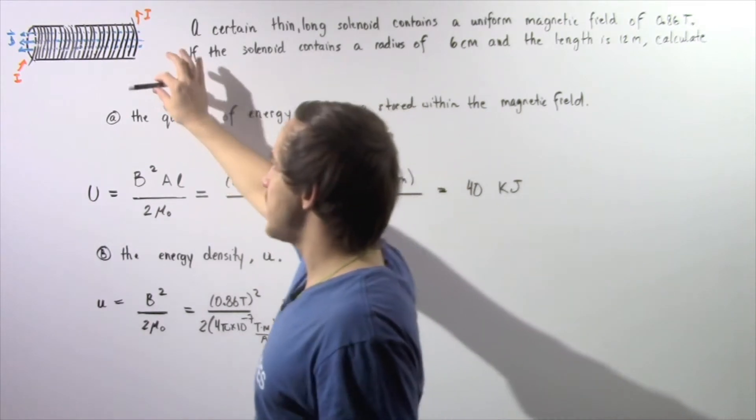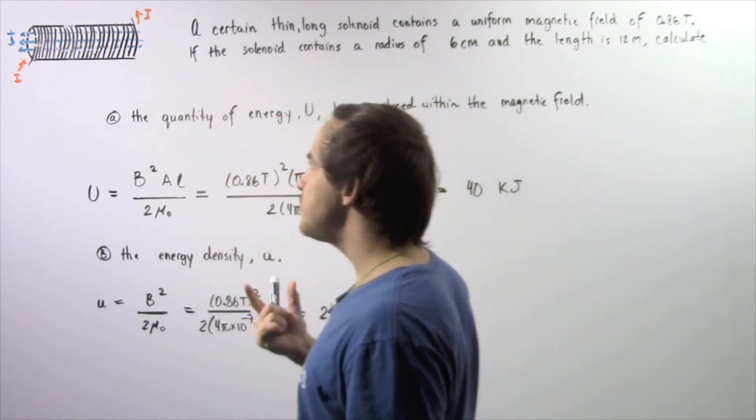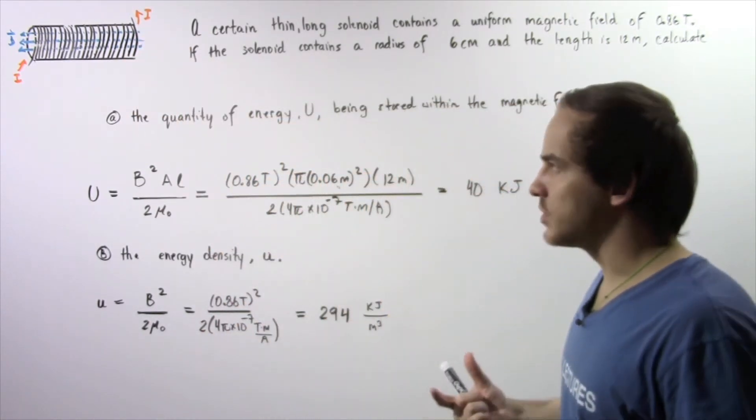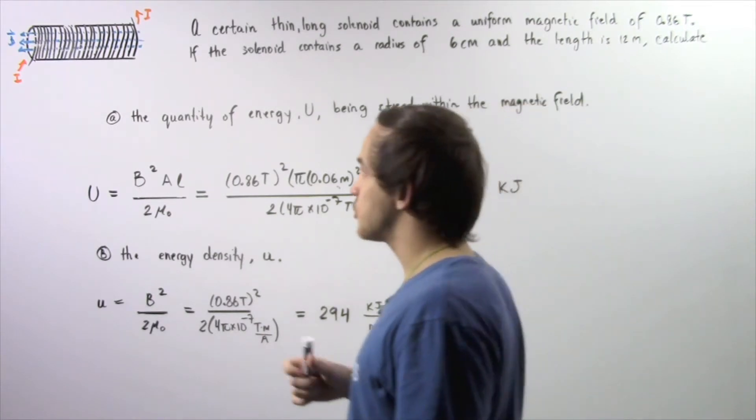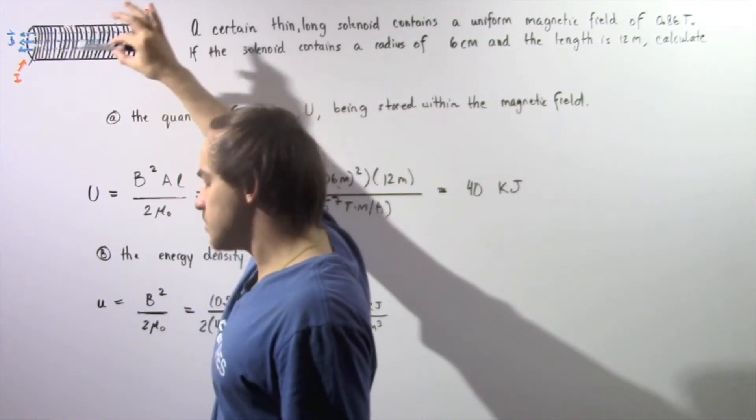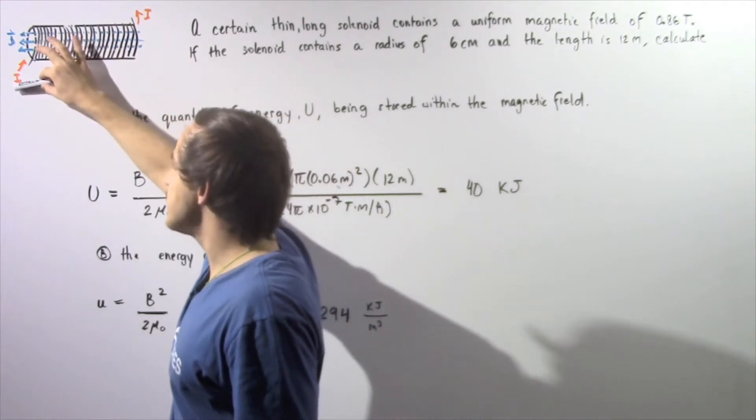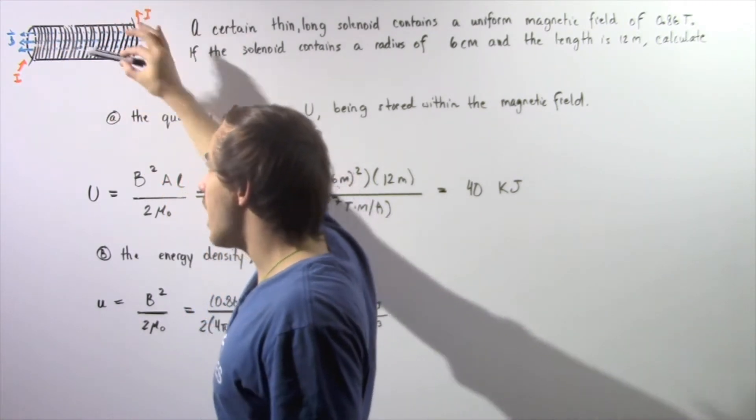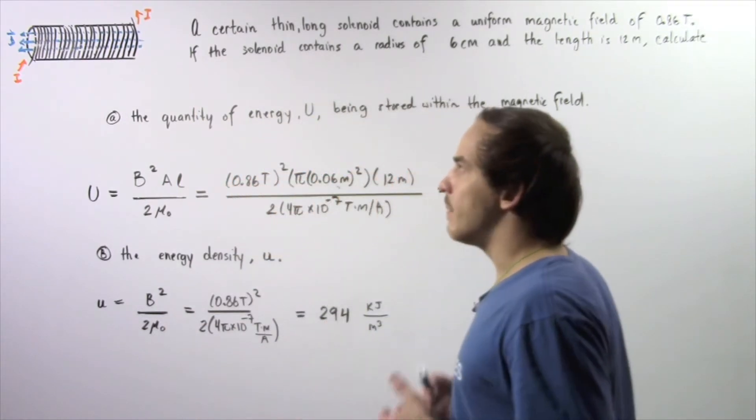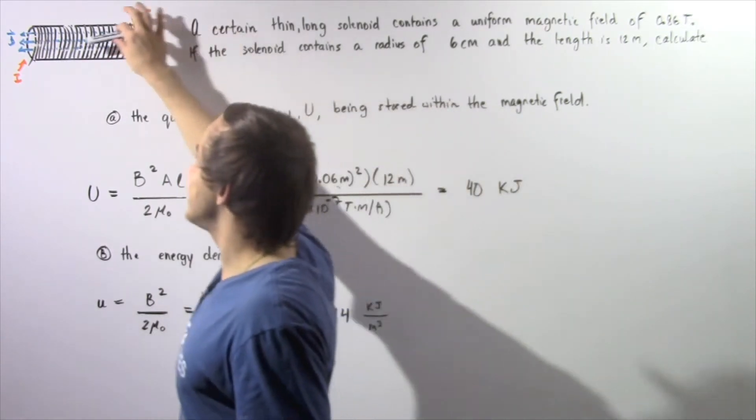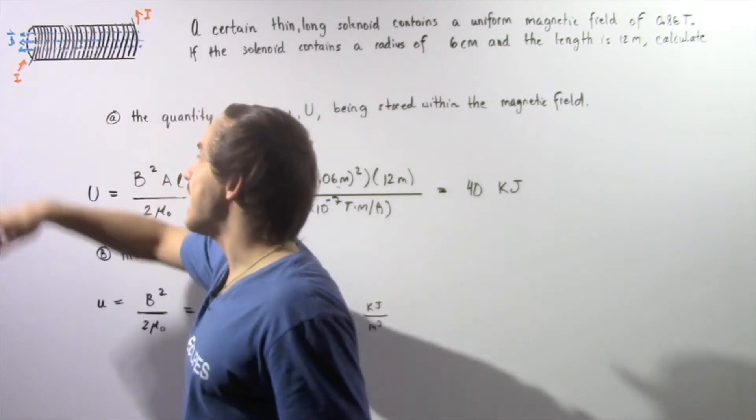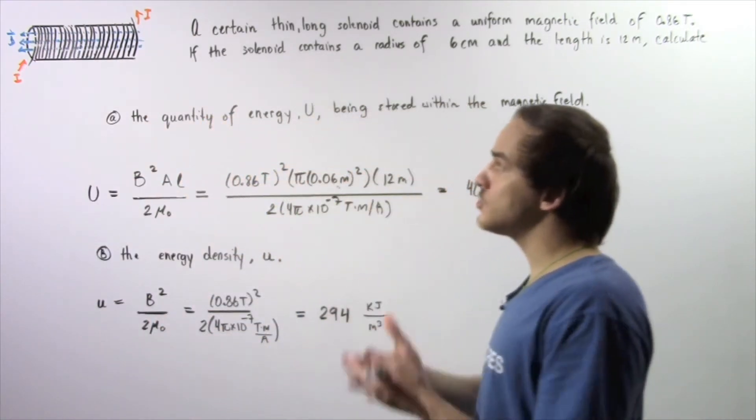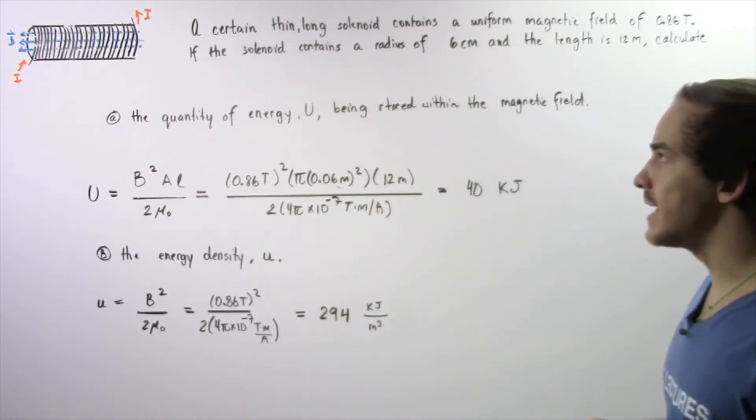So let's suppose we have the following inductor which is assumed to be a solenoid. We have an alternating electric current I traveling through our loops of wire. As this alternating electric current travels through the loops of wire, it creates a magnetic field inside our solenoid and all that energy is being stored within that magnetic field.